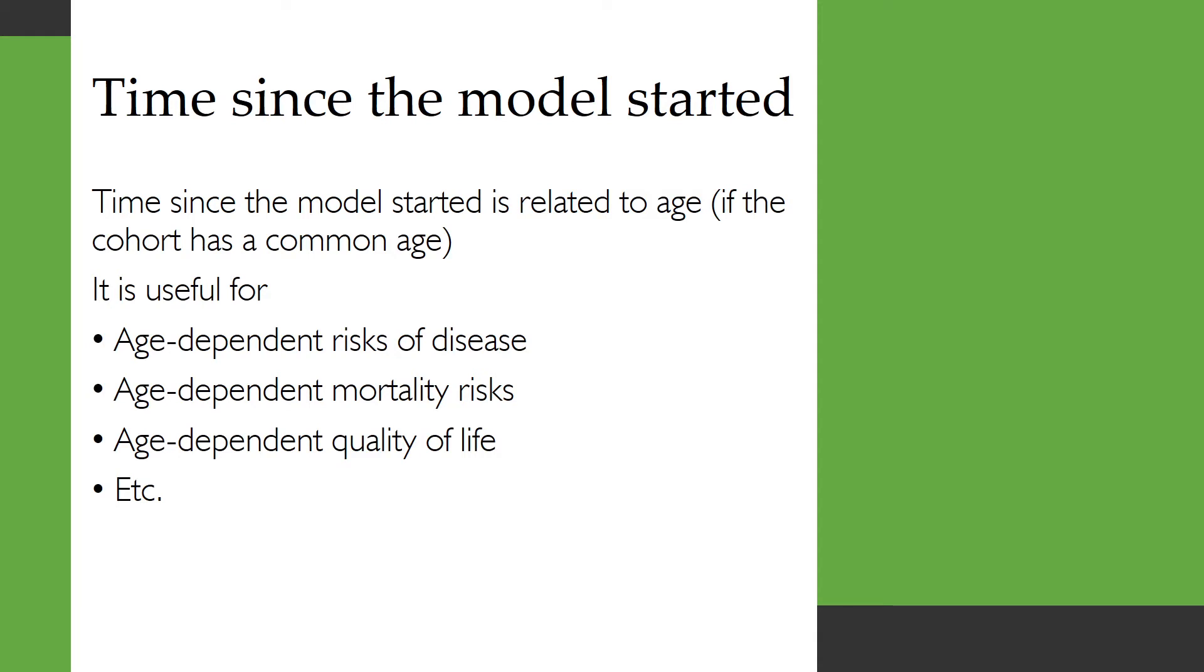So let's look at the first one in a bit more detail. Time since the model started. Usually time since the model started is related to age. So that's if your cohort has a common age and that means it's really useful for things like age-dependent risks of disease, age-dependent mortality risks, age-dependent quality of life, plenty of things.